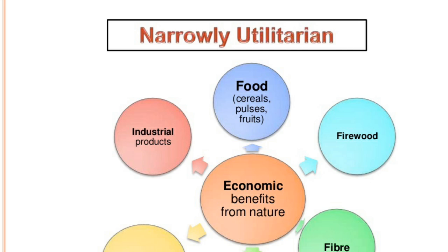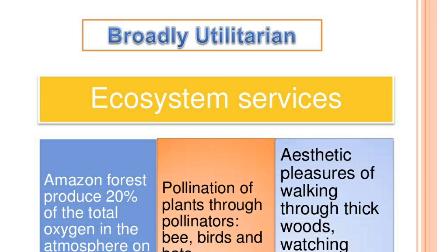The narrow utilitarian value refers to the health benefits of biodiversity for human life. Food from the surrounding environment includes cereals, pulses, fruits, firewood, fiber, industrial products, and medicines. All these are the economic benefits from nature — broadly utilitarian.